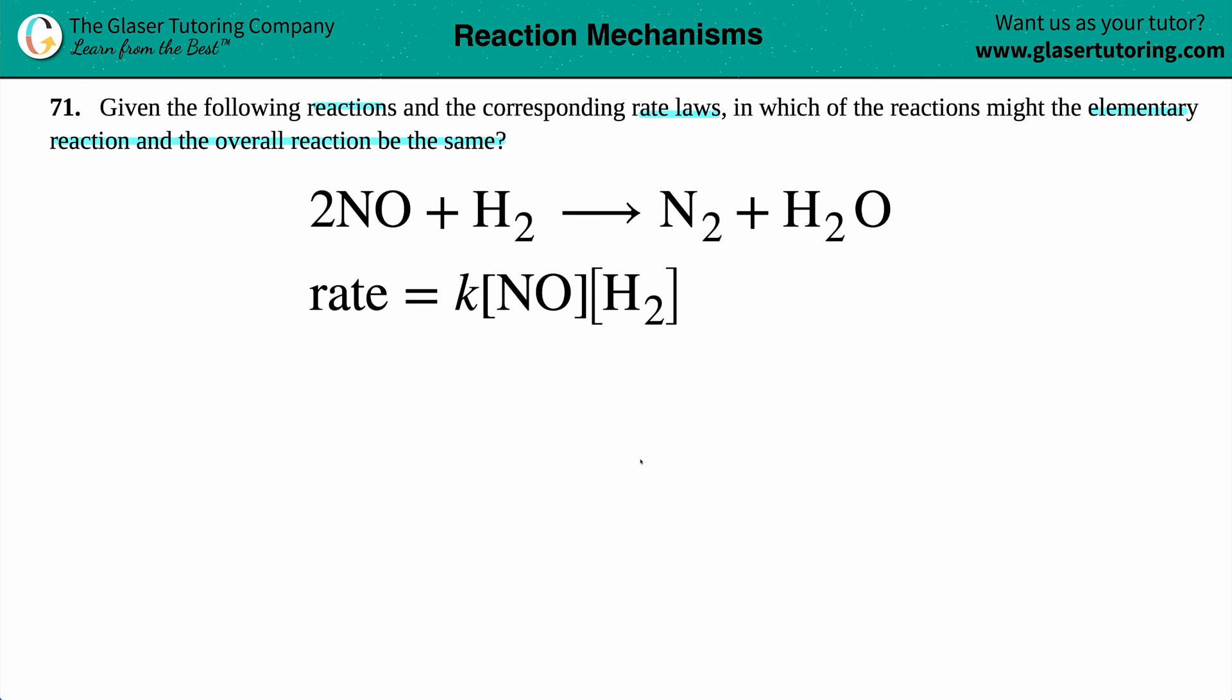Okay, so we have this balanced equation, right? 2NO plus H2 yields N2 plus H2O, and we have its corresponding rate law. In this question, we have to find out if this elementary step, it's one single step, is the actual overall reaction for the equation.